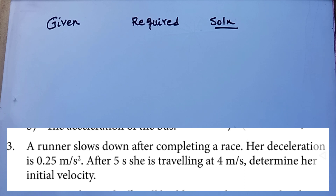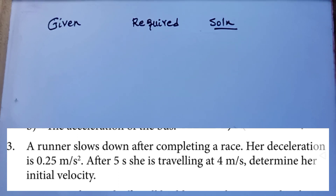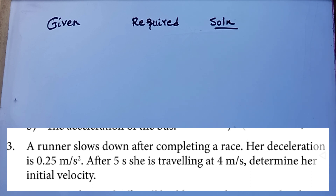Question number 3: A runner slows down after completing a race. Her deceleration is 0.25 m/s². After five seconds, she is traveling at 4 m/s. Determine her initial velocity.